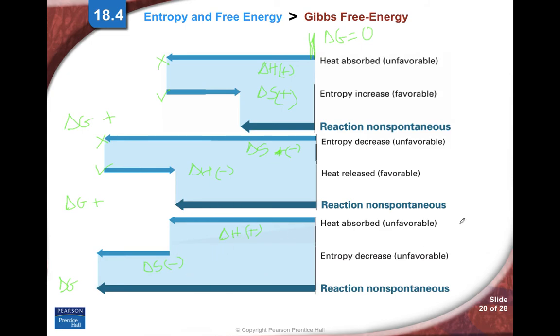This situation at the bottom is important because it's a situation that you will never, never have be spontaneous. Because the delta H is endo which is not favorable, and the delta S is negative, lower entropy. So those two things together will always make a situation where delta G is positive, non-spontaneous.